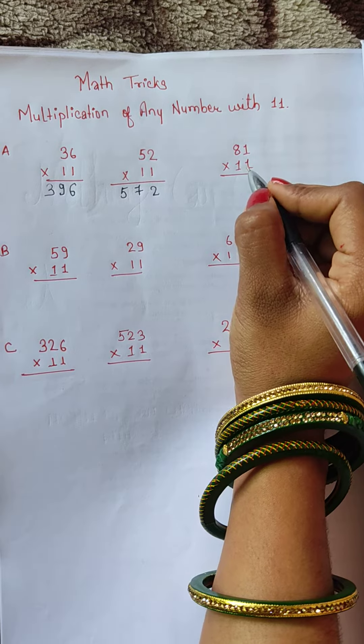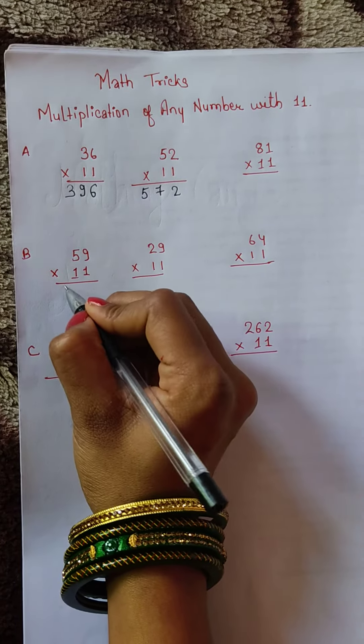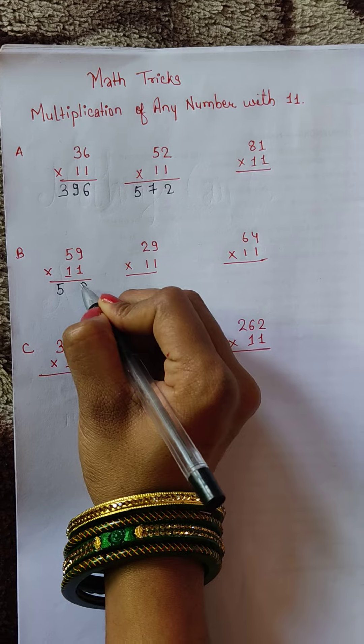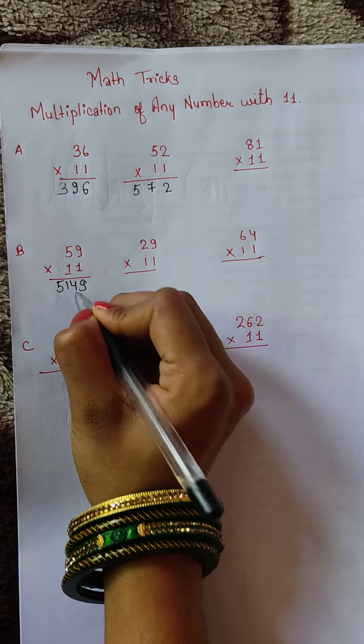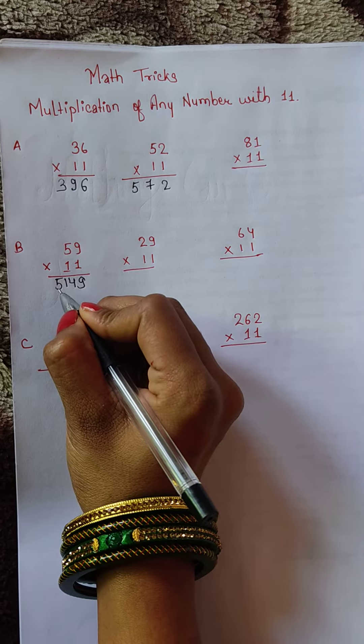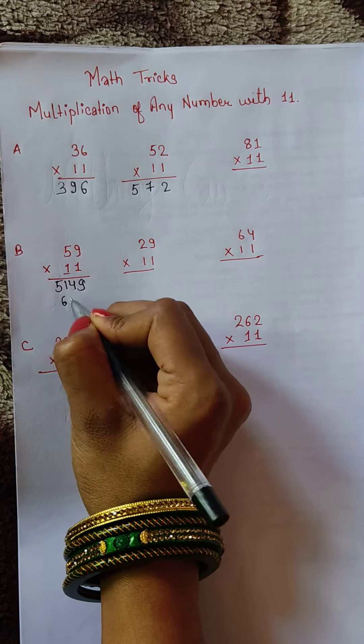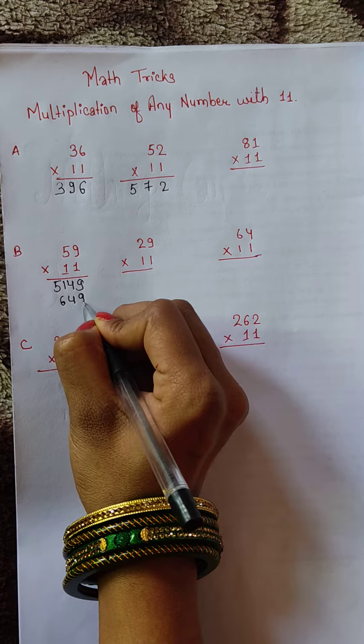Here we have 5 and 9, and 5 plus 9 equals 14. Then in the next step, we add 5 plus 1 equals 6, write 4, and write 9. This will be the final answer: 649.